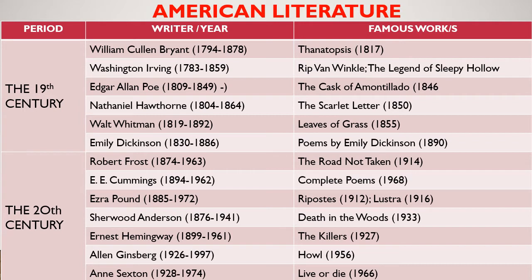Moving on to the 20th century: Robert Lee Frost was an American poet whose work was initially published in England before the United States. He wrote poems portraying ordinary people in everyday situations using traditional stanzas and blank verse in iambic pentameter with no rhyme. He died in 1963. Next is E.E. Cummings, known for his unconventional punctuation and phrasing — an American poet, painter, essayist, author, and playwright who wrote approximately 2,900 poems, two autobiographical novels, four plays, and several essays.